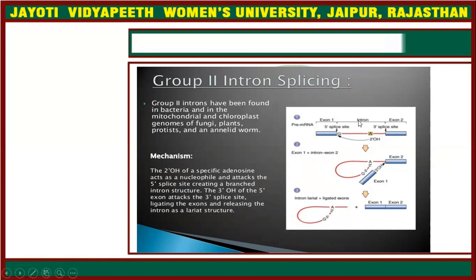Introns are non-coding regions. Group 2 intron splicing performs the function of removing introns and joining exon 1 and exon 2. They cleave the intron region and after cleaving, they join exon 1 and exon 2 to each other, removing the non-coding region. Exons are the coding regions.